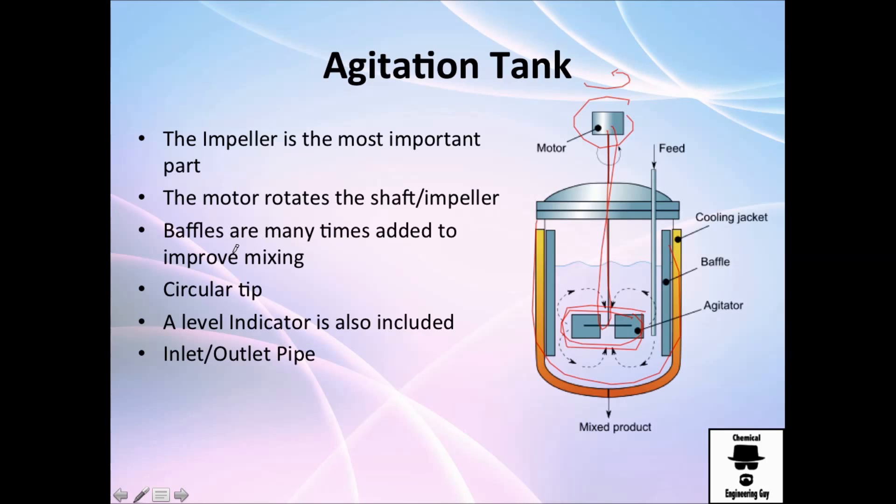Baffles are many times added to improve mixing, even though it's not necessary. You could actually go down to your kitchen and check out the blending machine. It has these stuff right here which promotes more random movement or agitation. The circular tip is here, and normally you will also include the level indicator because this is a steel vessel, you wouldn't see inside so you don't know if the propeller is moving or if the fluid is agitated.